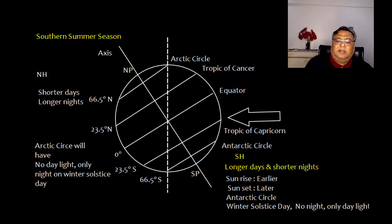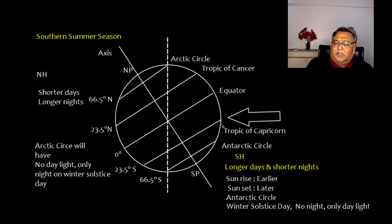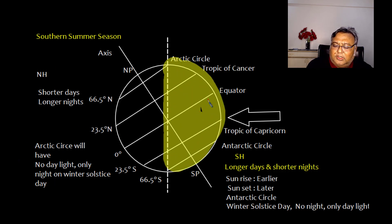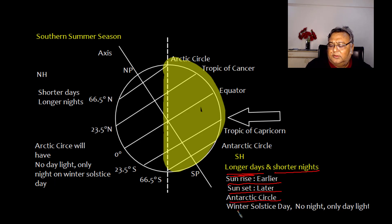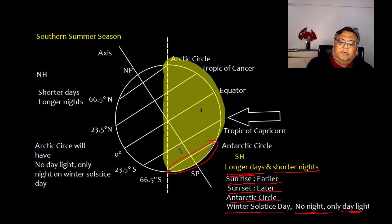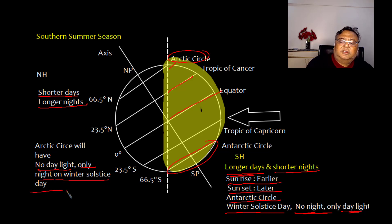In the southern summer season, the sun's rays fall at the Tropic of Capricorn — 23.5° south latitude. In the southern hemisphere the days are longer and nights shorter; sunrise is earlier and sunset is later. Within the Antarctic Circle on this day there is no night — only daylight. Conversely, in the northern hemisphere days are shorter and nights longer, and within the Arctic Circle there is no daylight — only night on winter solstice day.